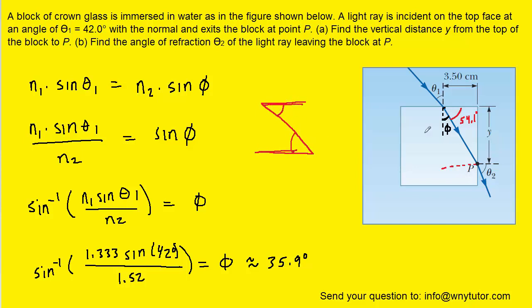So if this angle is 54.1 degrees, then this angle right here also is 54.1 degrees. And the reason that's useful is because now we can apply Snell's law again to find theta 2. So let's set that up.